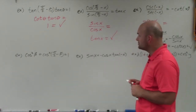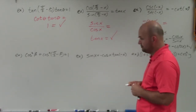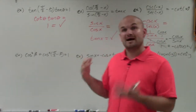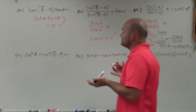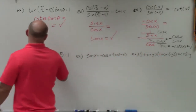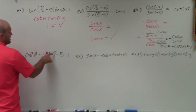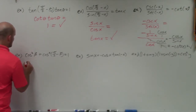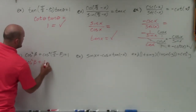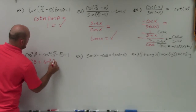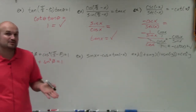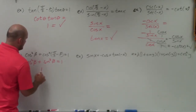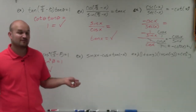In the next example I have cosine squared of beta plus cosine squared of pi over 2 minus beta. Whenever I see pi over 2 minus your angle, I always think co-function identity. So cosine squared of pi over 2 minus beta equals sine squared of beta. Therefore I have cosine squared of beta plus sine squared of beta equals 1, and by the Pythagorean identity, cosine squared plus sine squared of any angle equals 1 — so the identity is verified.